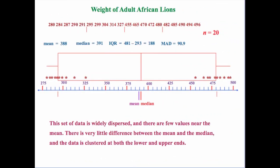Let's take a different context. Let's say you have 20 lions and all of the lions are weighed — here's our data set in order from least to greatest. We figure out that the average is 388. Our median is 391, falling halfway between 327 and 455.